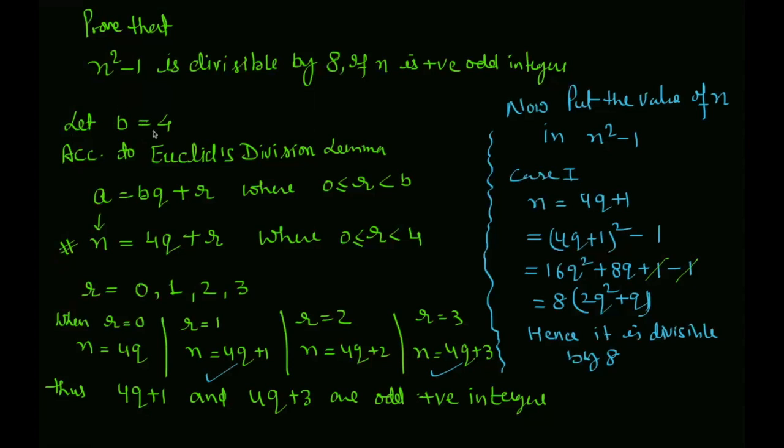Let b equal to 4. According to Euclid's division lemma, a equal to bq plus r where r is less than b and greater than or equal to 0. Now, in place of a we will have n to get this whole equation.